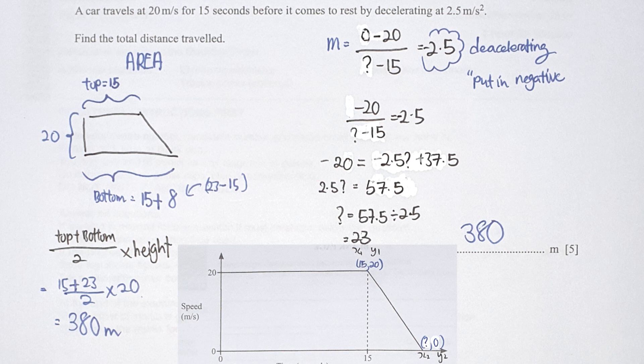After obtaining that, you can now proceed to calculate the area because area of a speed time graph is your total distance travel. So the top part, you have 15. The bottom, which is 23. And the height of itself is 20. Fill it up to the formula. You will get your final results as 380 meters.